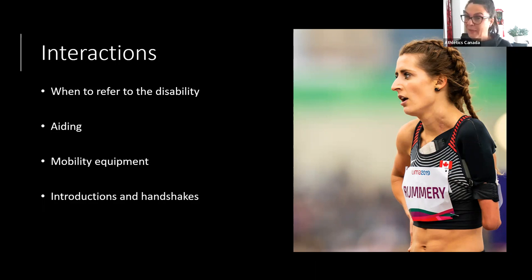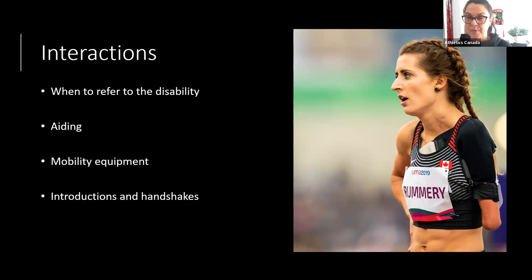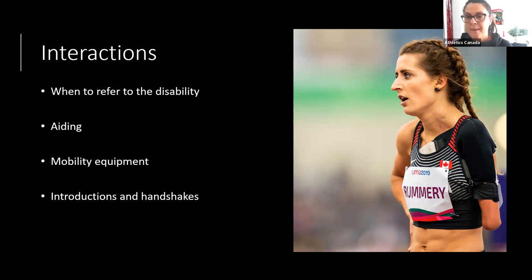If you're meeting someone with a vision impairment, introduce yourself by name: 'Hi, I'm Fanny, nice to meet you.' If you've met them before, say 'Hey Joe, it's Fanny — remember we met in such and such context.' Make sure to introduce any other people who are with you. If you're in a conversation and trying to get their attention, say their name so they know you're talking to them, since you can't rely on body language or eye contact.